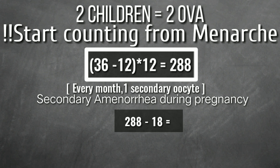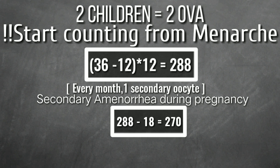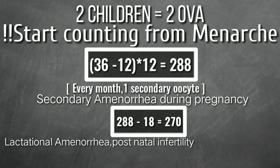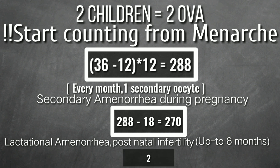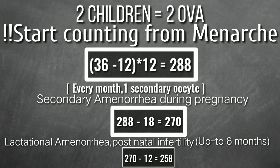One more important thing: lactational amenorrhea means no secondary oocytes are produced for 6 months of breastfeeding per child — 12 months in total for both children. Deducting 12 from 270 gives 258 secondary oocytes possibly produced. Therefore, the final answer is B: 2 ova and 258 secondary oocytes.